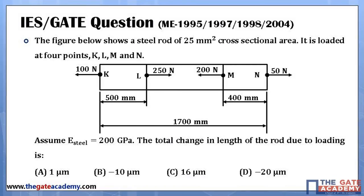Now let us solve a numerical — it is an IES and GATE question. The figure shows a steel rod of 25 mm² cross-section. The area of cross-section is the same from left to right. It is loaded at four points K, L, M, and N with forces as shown in the diagram. Assume Young's modulus for steel is 200 GPa. Find the total change in length of the rod due to the loading. We divide this whole bar into three parts.